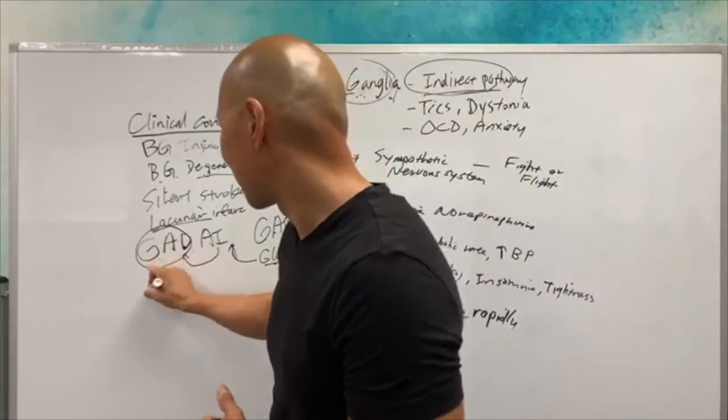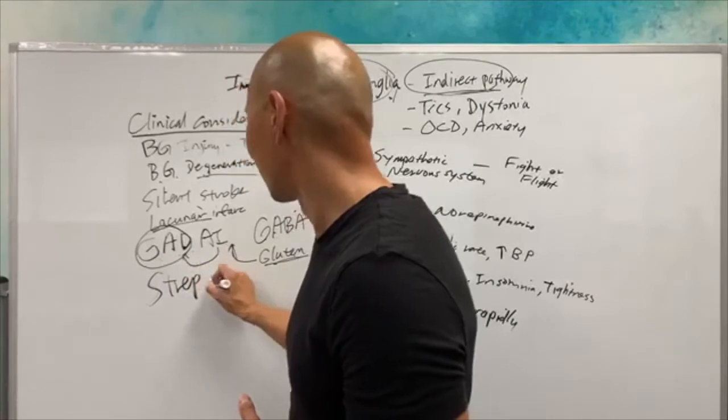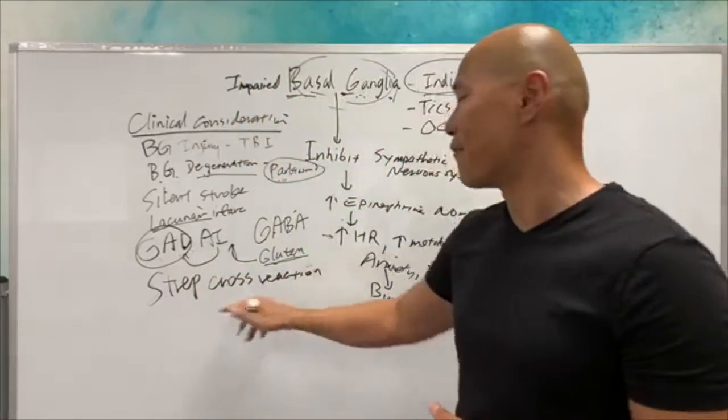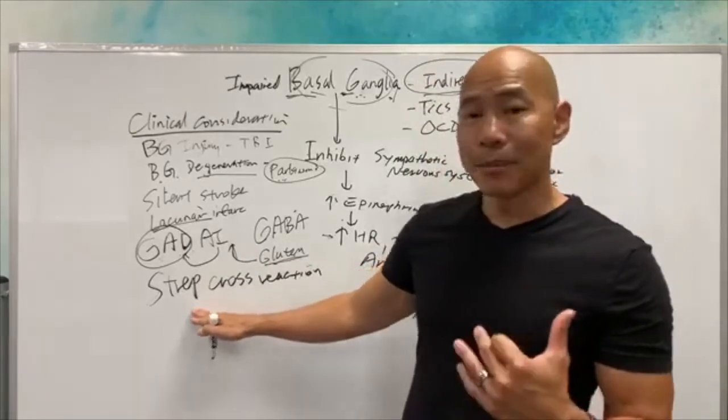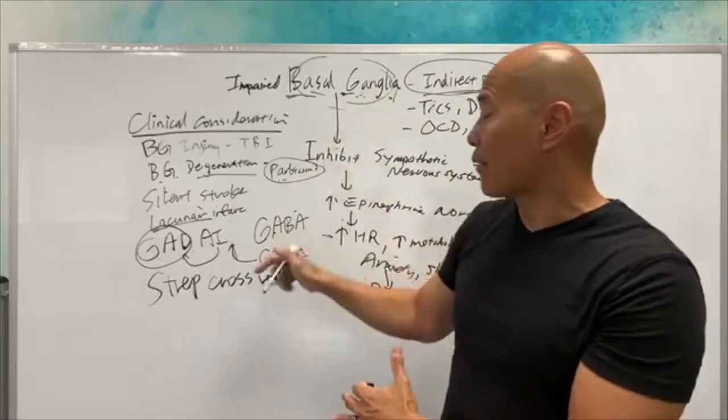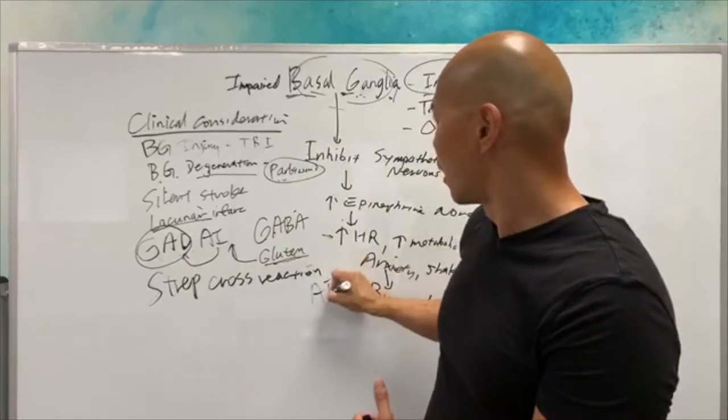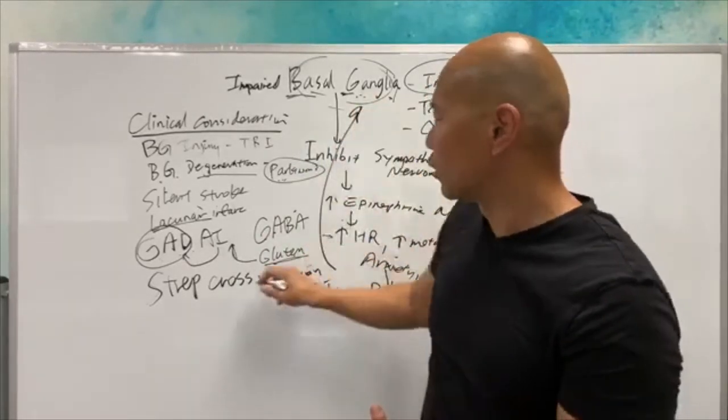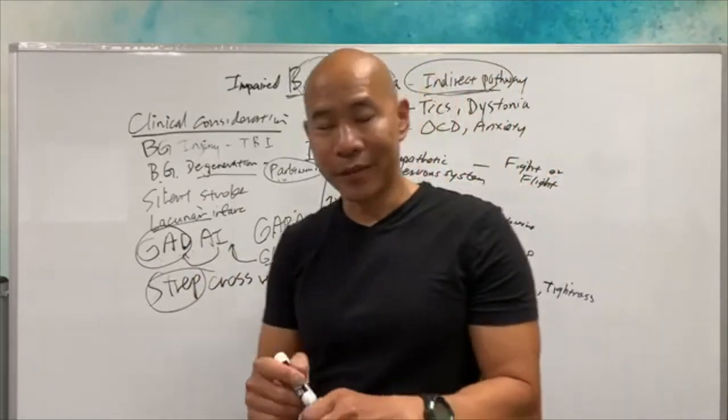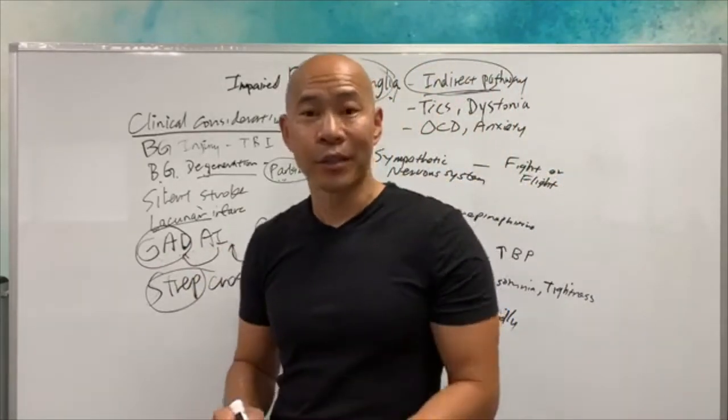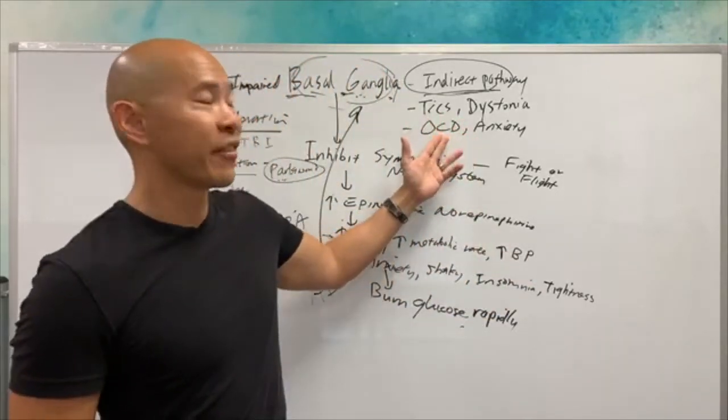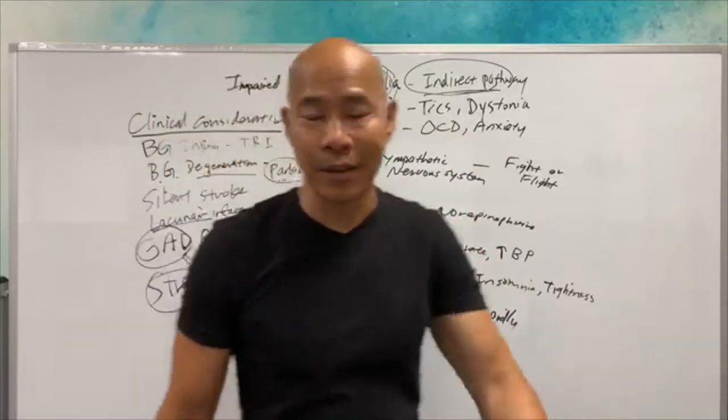You can also have strep cross-reaction. What that means is you can have a strep infection and now the antibody to strep can cross-react with basal ganglia and now you have autoimmune to this part of the brain due to an initial strep infection. In kids, this can happen. You have kids that will get a strep infection and then all of a sudden develop tics. All of a sudden develop OCD and anxiety. They didn't have that before, all of a sudden they have it.